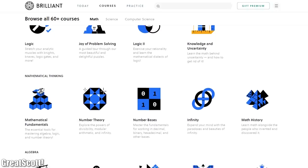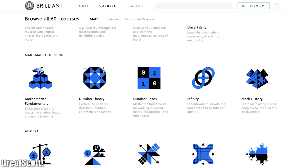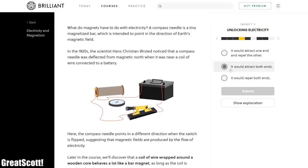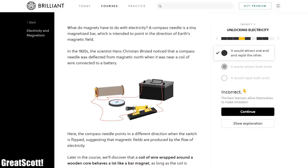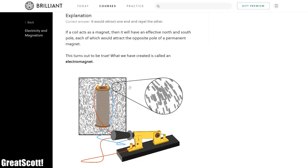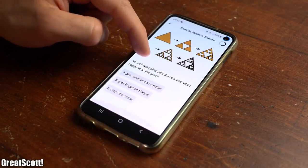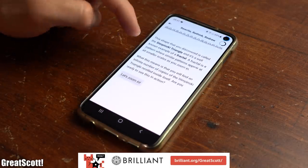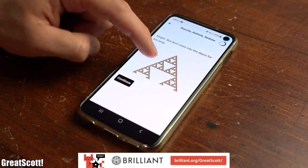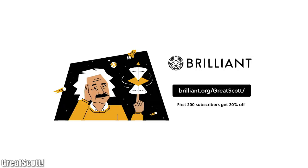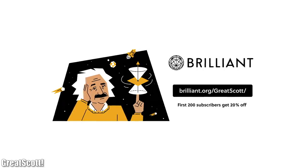This video is sponsored by Brilliant, which is a website and app that I would describe as an interactive storyteller where you can learn all about math, science, and computer science. I was having a look at a few different courses from them and I have to say that in combination with all the interactive puzzles and storytelling elements, it was a rather fun and educational experience. So if you want to try out Brilliant for yourself then go to brilliant.org slash great scott and sign up for free, and the first 200 people that sign up for an annual subscription through this link will also get a 20% discount.